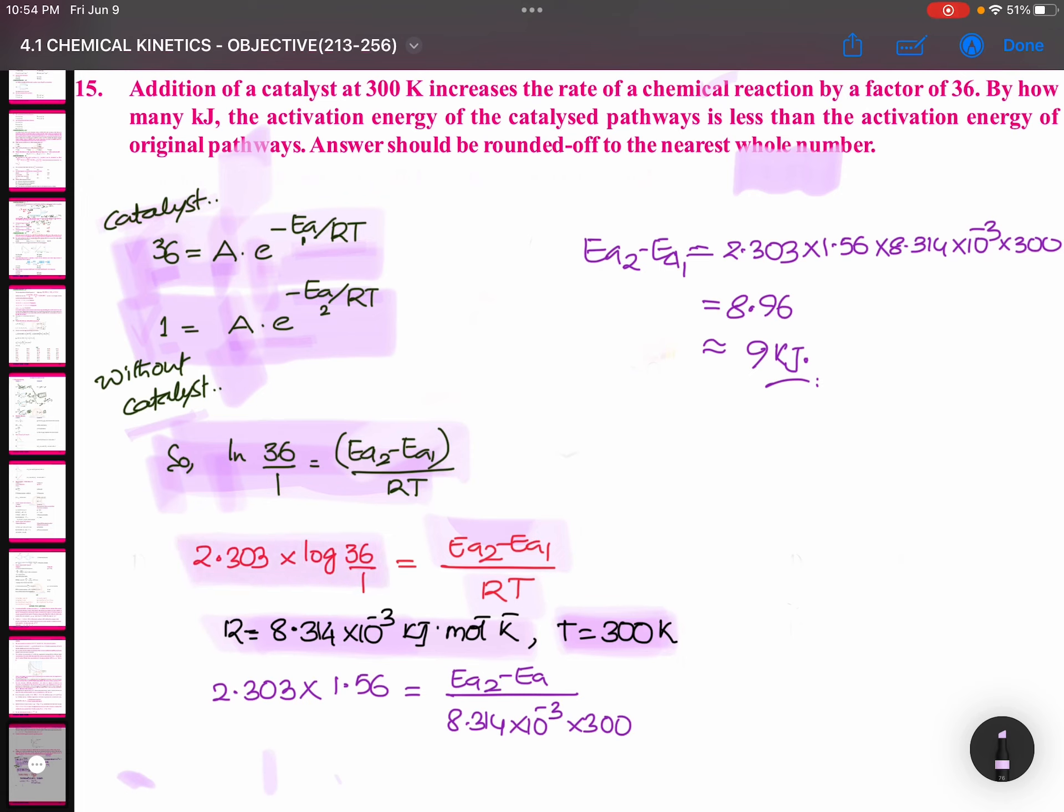So this is the formula. 2.303 times 1.56, where log 36 value is 1.56, equals Ea2 minus Ea1 divided by 8.314 times 10^-3 times 300. When you simplify, you get 9 kilojoules for Ea2 minus Ea1. That means the difference between the two activation energies is 9 kilojoules. It's a wonderful question. Thank you so much.